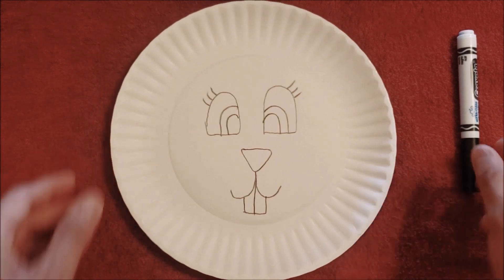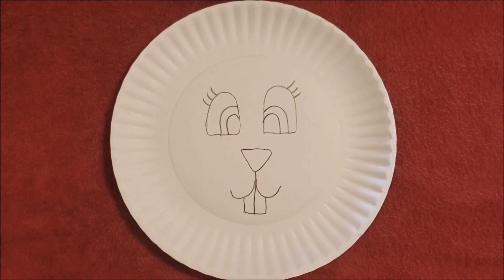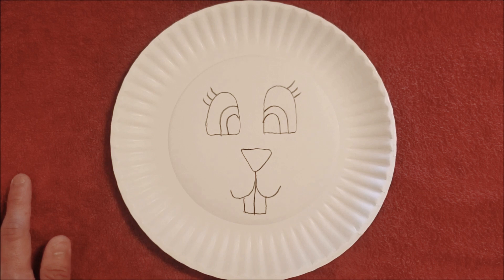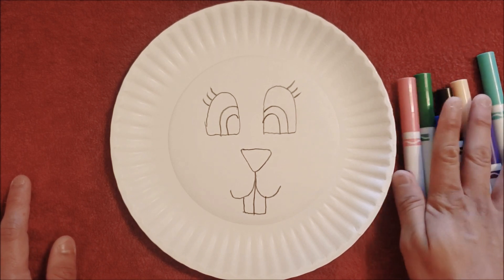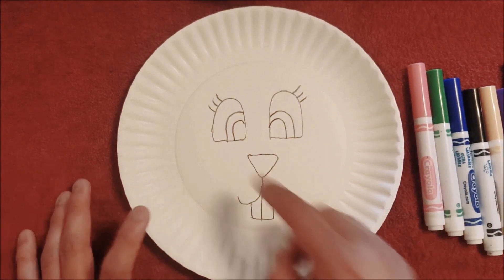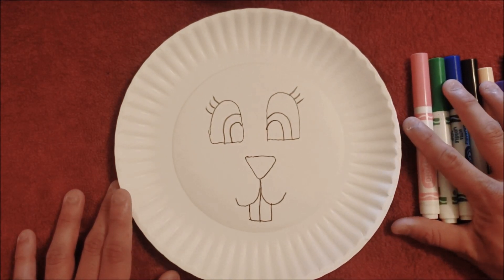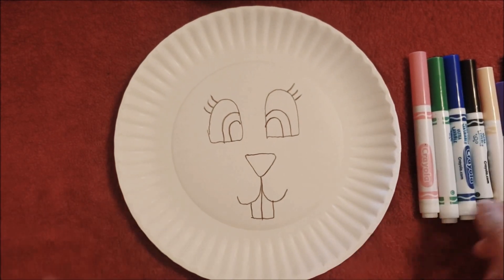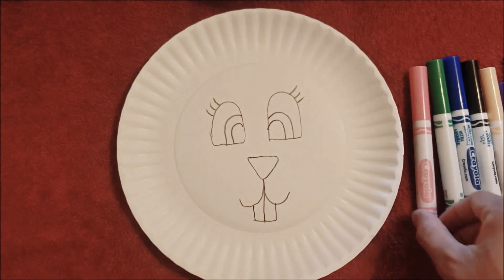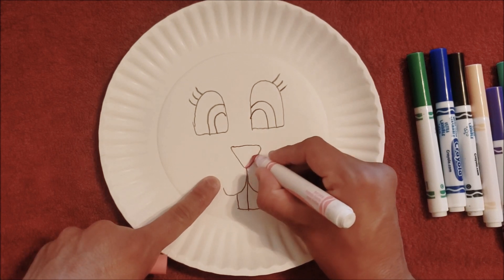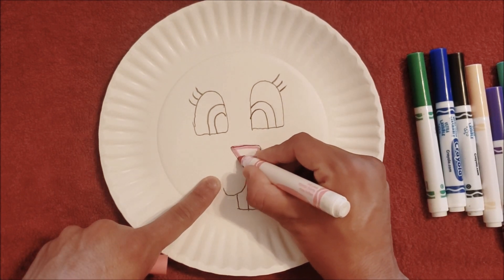Now this part, the fun part, is for the child. You guys can get any colors, any markers, any color pencils, whatever you guys have to start coloring your Easter Bunny. If you like, you guys can color the whole head one color. For me, because I'm a big fan of white bunnies, I'm just going to color this part. I'm going to give it some pink nose.